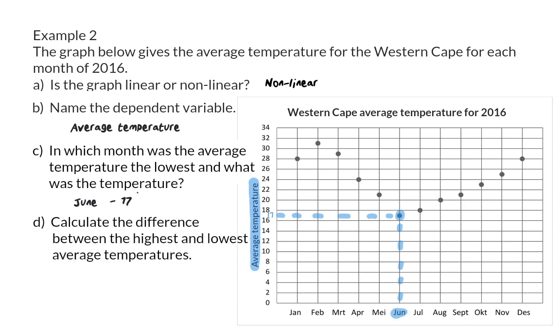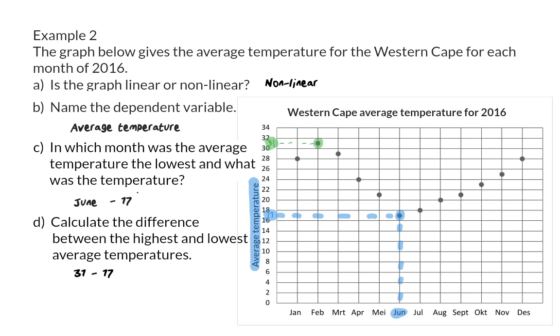Question D: Calculate the difference between the highest and lowest average temperatures. We already know that the lowest temperature was 17 degrees, and our highest temperature, the maximum, is 31 degrees. So the difference between these two temperatures is 14 degrees.